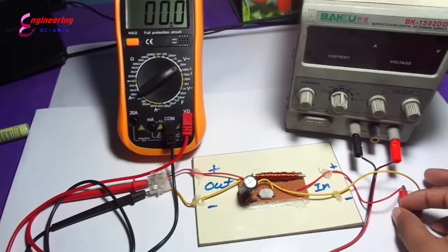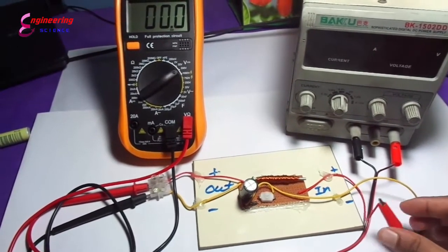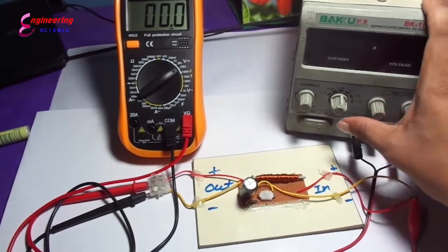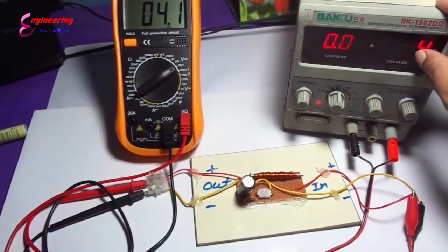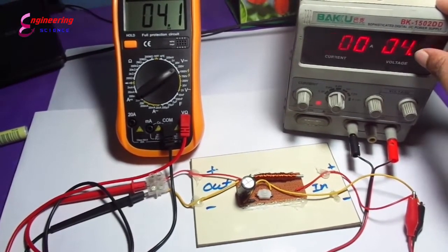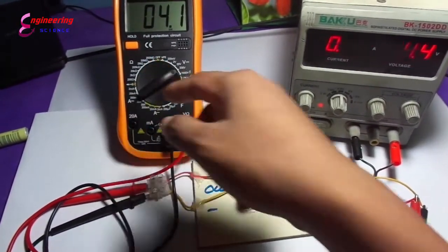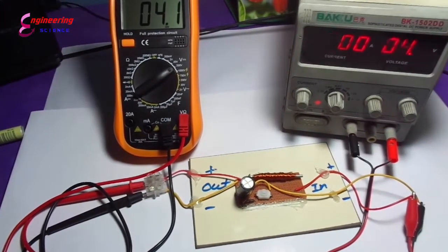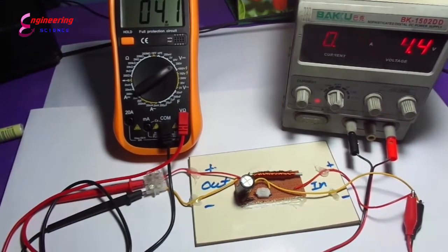The input terminal. I connect the input terminal to the power supply at 4.4 volts DC here showing. The output terminal connects to the multimeter. The main working principle is the switch.